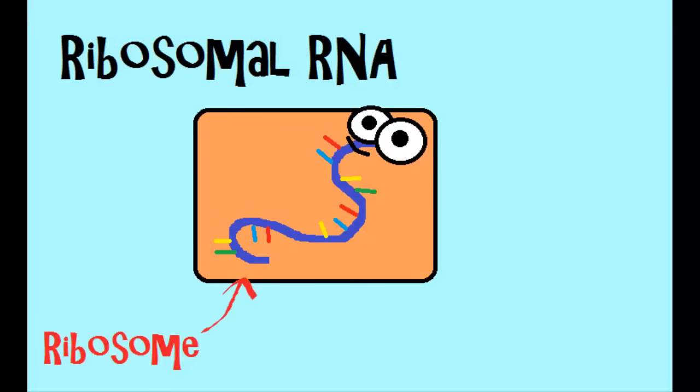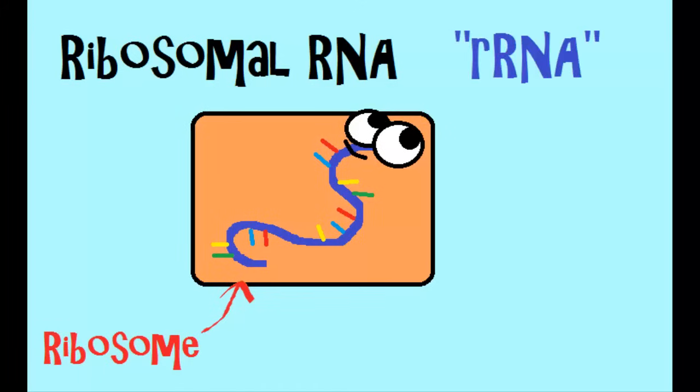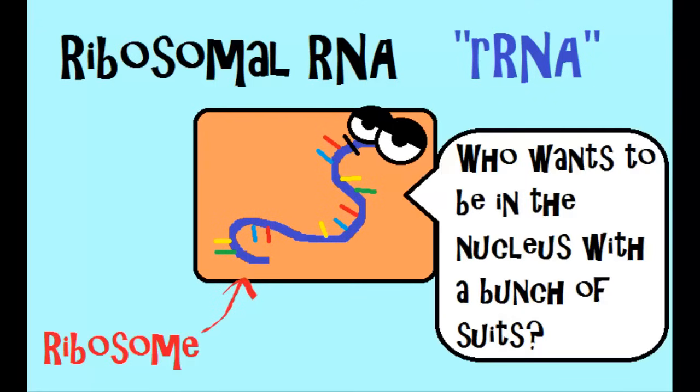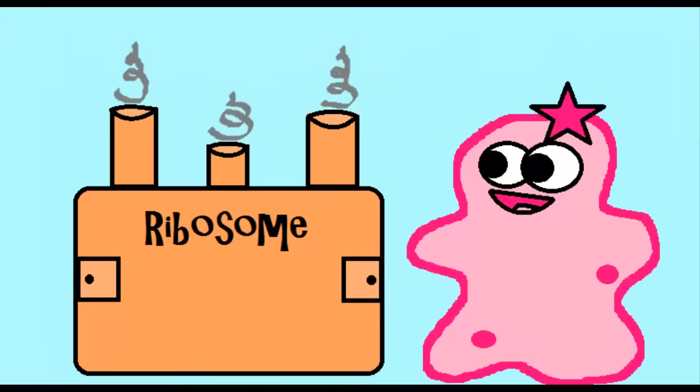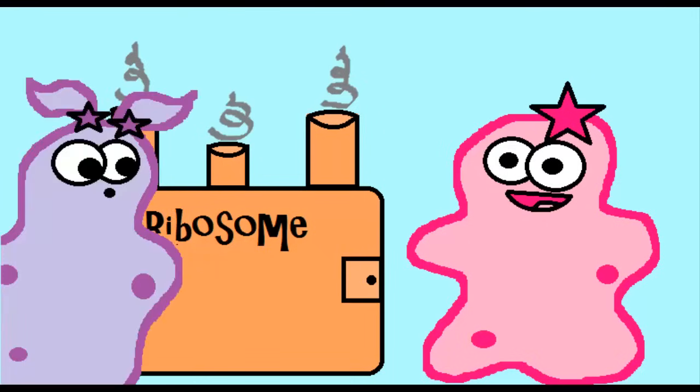And then we have rRNA. That stands for ribosomal RNA. And so, kind of like it sounds, it actually is a component of the ribosome. If you remember back in cells, we've talked about how ribosomes make protein. And it's a very important thing in protein synthesis. Obviously ribosomes are going to be involved, because that's what we're doing. We're making protein.